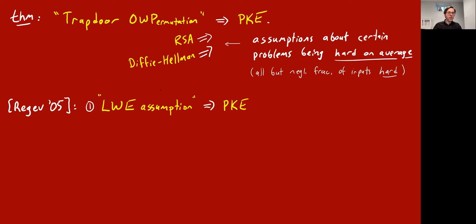Now I want to tell you about a cool development from 15 years ago due to Oded Regev, which was recently awarded the Gödel prize and led to great developments in cryptography theory. His paper from 2005 did two things: one, it introduced a new assumption called the LWE assumption — LWE stands for learning with errors — which is an assumption that a certain problem is hard. And he showed that if you make this assumption, then you can get public key encryption.